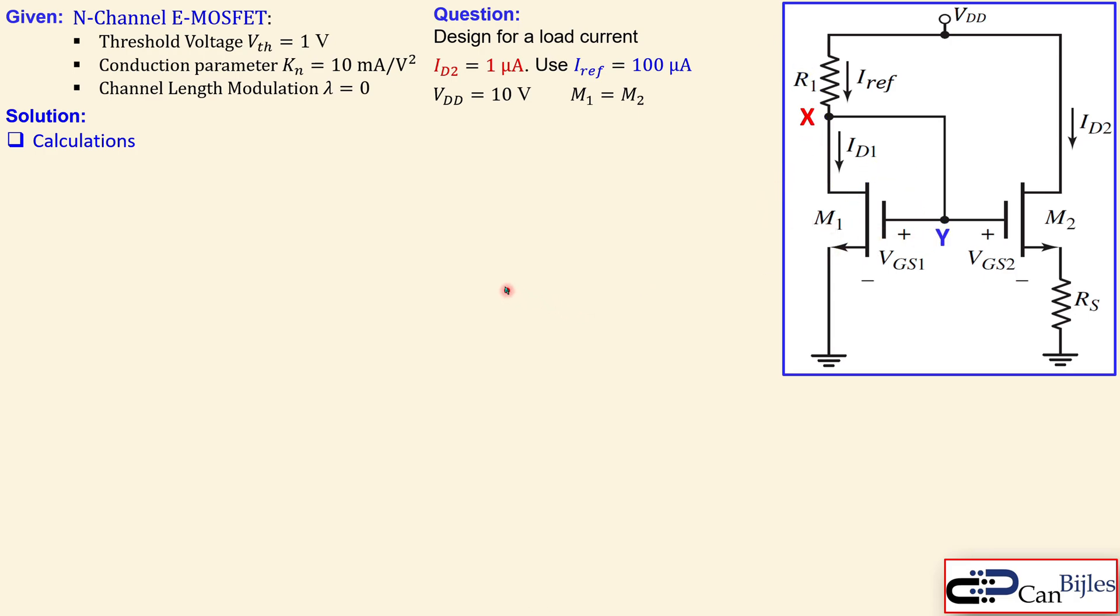That will be always helpful for our analysis. So we start with the Kirchhoff's current law at node X. We know one thing that is the advantage of the MOSFET over the BJTs: the gate currents are zero.